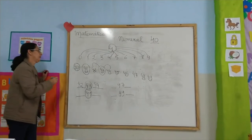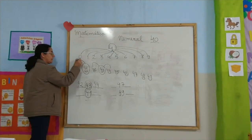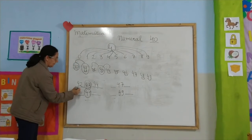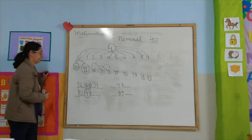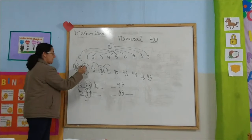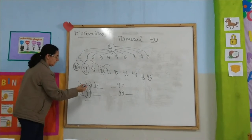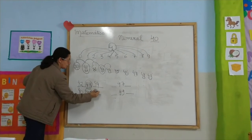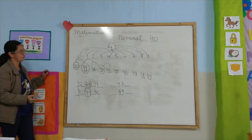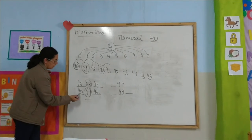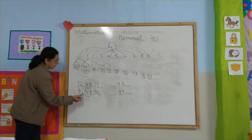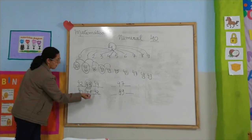Um vizinho mora antes, quem mora antes de 41: o chefe, 40. E depois de 41: 42. Então, os vizinhos do número 41: 40, 41, 42.